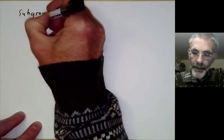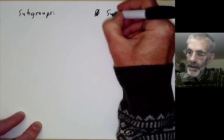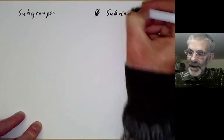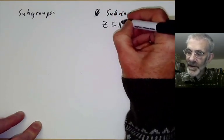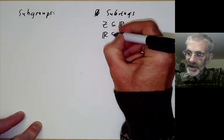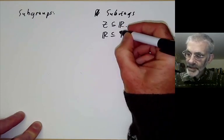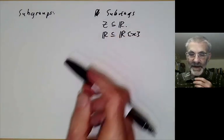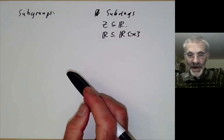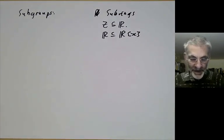Next we have subgroups and of course these correspond to subrings. There are lots of easy examples: for instance ℤ is a subring of the reals and the reals is a subring of the polynomial ring and so on. There's not very much to say about subrings except for the earlier comment that some things you think are subrings might not actually be subrings because they don't preserve the identity.